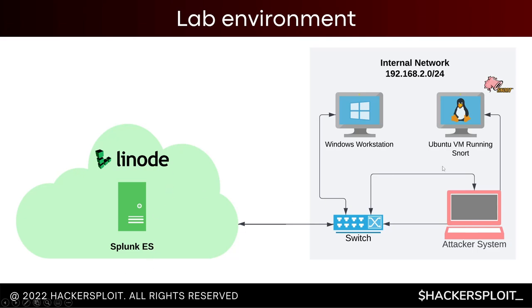Within my internal network, we'll have a very basic infrastructure: the Ubuntu virtual machine running Snort — the same one we used to set up Snort, Suricata, and Wazuh. We'll also have an attacker system that I'm going to use to perform some network intrusion detection emulation, running a couple of commands or scripts to emulate malicious network activity so that the traffic gets logged. This will give us a good idea of how helpful Splunk is for security event monitoring, especially in the context of network intrusions.